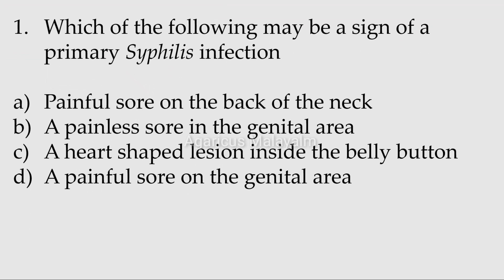Which of the following may be a sign of a primary syphilis infection? Answer options: option A, painful sore on the back of the neck; option B, a painless sore in the genital area; option C, a heart-shaped lesion inside the belly button; option D, a painful sore on the genital area.